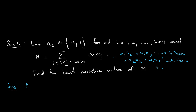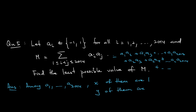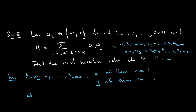Let's say among a₁, a₂, …, a₂₀₁₄, some are −1 and some are +1. Let x of them be +1 and y of them be −1. In total there are 2014 terms, so x + y = 2014.